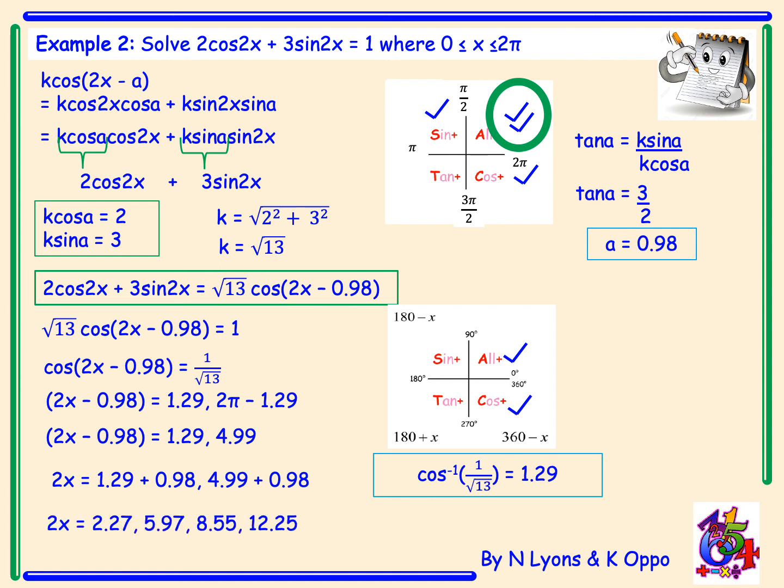Now you may be wondering where the 8.55 and the 12.25 came from. Well we take our first angle of 2.27 which was obtained by adding 1.29 and 0.98 and we add a whole wave to that which would be adding 2 pi using a calculator. And then our angle of 5.97 that was found by adding 4.99 and 0.98, again we add 2 pi to this and that gives our fourth angle of 12.25.